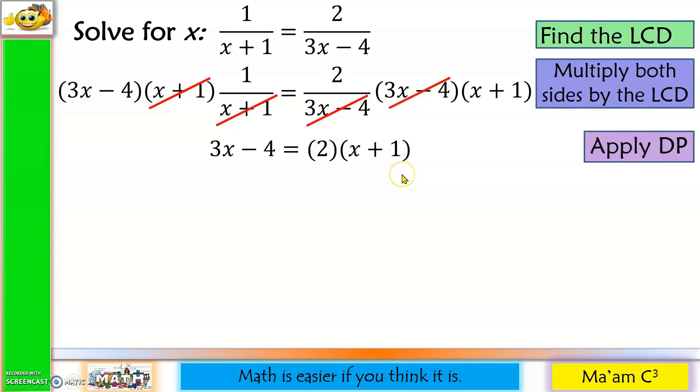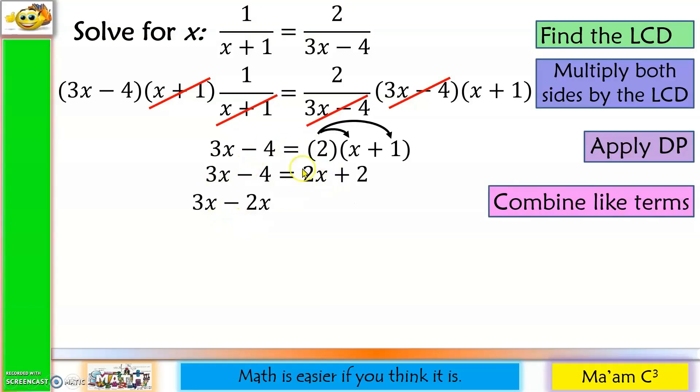Next, let us apply the distributive property. So 3x minus 4 equals 2 times x is 2x, 2 times 1 is positive 2. Next, let us combine like terms. So 3x, 2x moving to the other side will become negative 2x, equals, copy 2, negative 4 moving on the other side will become positive 4.